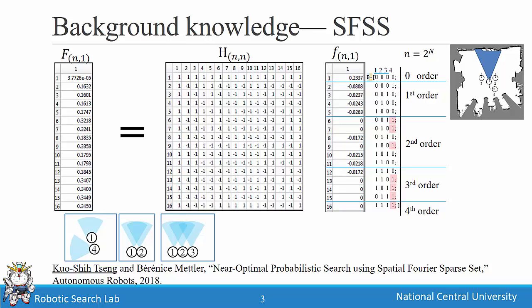The background is as follows. For example, if we have four sets and a set function, the coverage function will have two-to-the-four possible values — in this case n=4, so we will have 16 kinds of values. If we take a Fourier transform of this function using the Hadamard transform, we get the Fourier coefficients. The zero order means you select no sets, and the first order means you select one set.